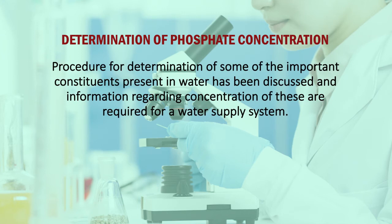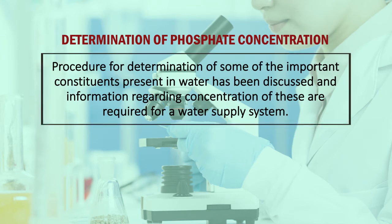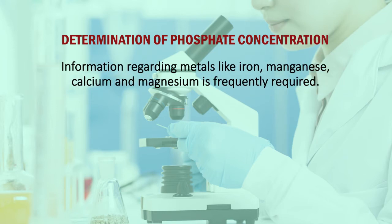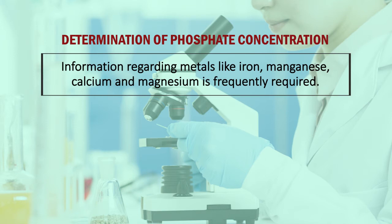The procedure for determination of some of the important constituents present in water has been discussed, and information regarding their concentration is required for a water supply system. Analysis for minerals present in water is time-consuming and usually not required except as a record. Information regarding metals like iron, magnesium, and calcium is frequently required.